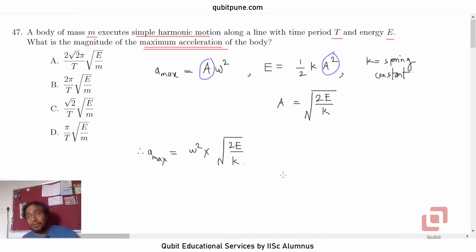Now, we also know that the speed omega is actually root of K by M, where M is the mass of the oscillator.